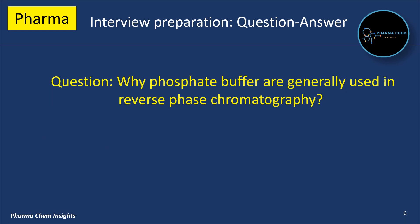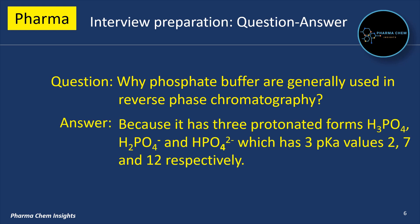Next Question: Why are phosphate buffers generally used in reverse phase chromatography? Because it has three protonated forms — H₃PO₄, H₂PO₄⁻ and HPO₄²⁻ — which have three pKa values of 2, 7 and 12 respectively.